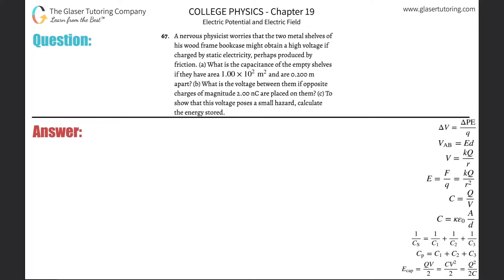Number 67: A nervous physicist worries that the two metal shelves of his wood frame bookcase might obtain a high voltage if charged by static electricity, perhaps produced by friction. Letter A: What is the capacitance of the empty shelves if they have an area of 1 times 10 to the 2 square meters and are 0.2 meters apart?